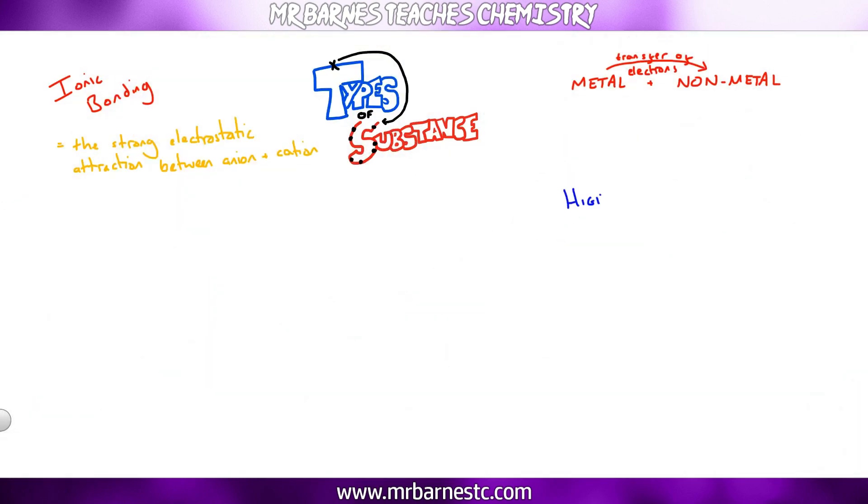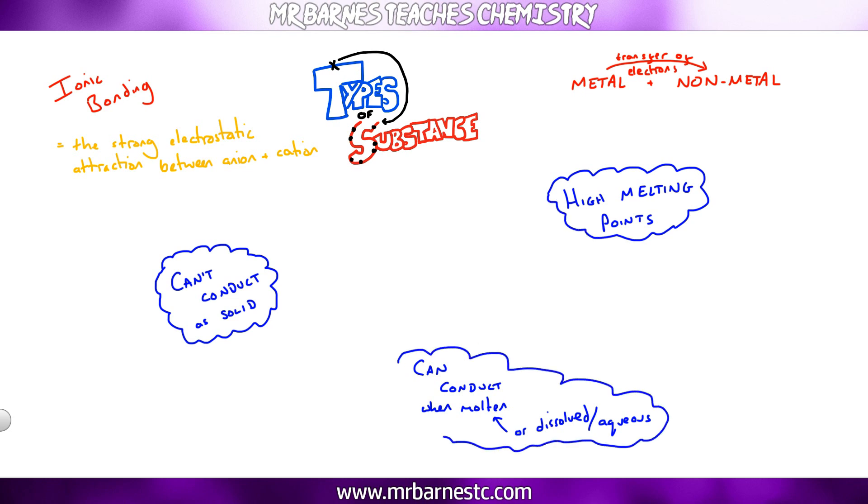The final part of the ionic bonding section is the properties. Now nice and simply, ionic compounds have high melting points, they cannot conduct electricity when solid, but they can when they are molten or dissolved or aqueous. And the explanation for all three of those is all linked to the definition of the bond, which is the strong electrostatic attraction between your anion and cation.